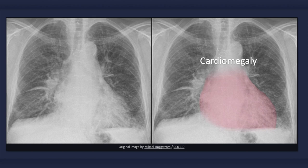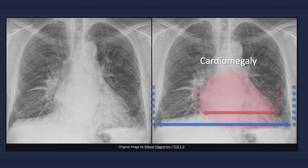Cardiomegaly, particularly in concert with other findings, is a suggestive feature of congestive heart failure. However, keep in mind that congestive heart failure can occur in the presence of a normal-sized heart. Cardiomegaly is said to be present when the cardiothoracic ratio is greater than 0.5 — that is, when the largest transverse distance between the left and right heart borders is greater than half the width of the thorax. In this image, the cardiothoracic ratio is approximately 0.6.